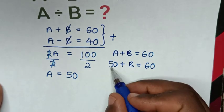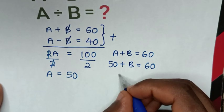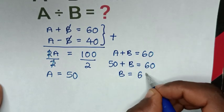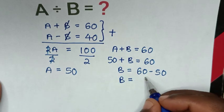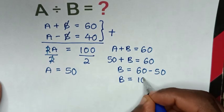Taking 50 to the right side, B equals 60 minus 50, which equals 10.